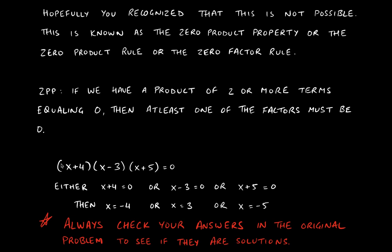Mathematicians don't like uncertainty, so we take out an insurance policy — we hedge our bets. We don't know which one of these equals zero, so we set all of them equal to zero. If you set x + 4 equal to zero, that gives you x = −4. If you have x − 3 = 0, adding 3 to the other side gives x = 3. And finally, x + 5 = 0 gives x = −5.